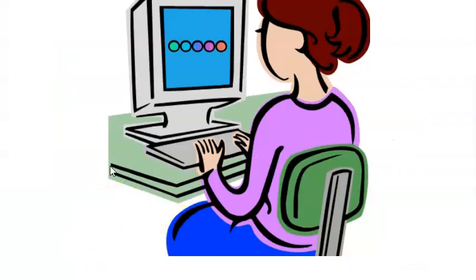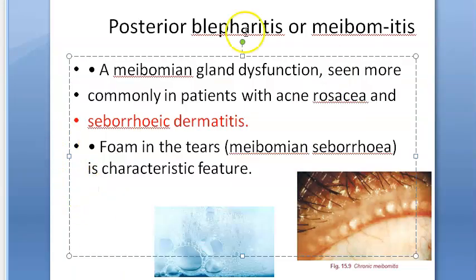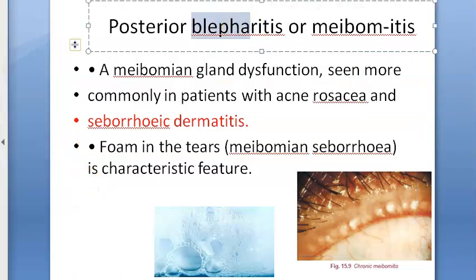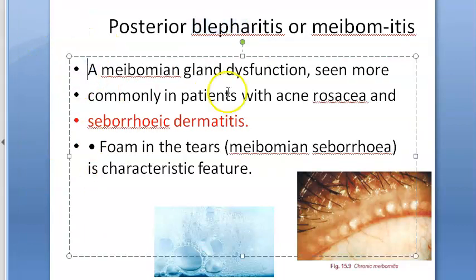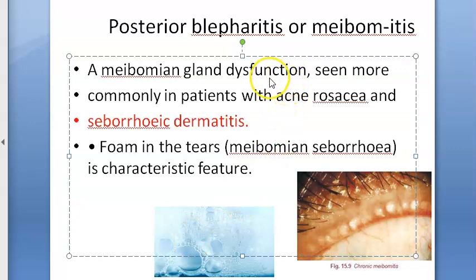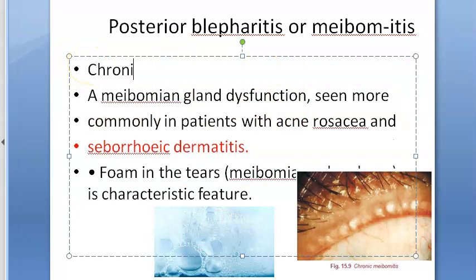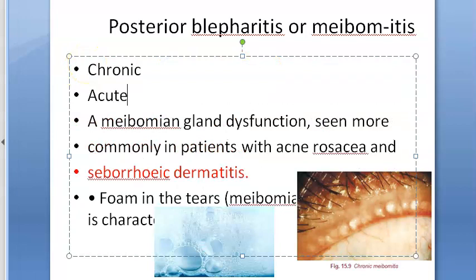Now let us look at posterior blepharitis or meibomitis in detail. There are two types: chronic and acute. Chronic meibomitis is the commonly occurring meibomian gland dysfunction, commonly seen in middle-aged persons, especially those with acne rosacea or seborrheic dermatitis. Bacterial lipases are blamed to play the main role in its pathogenesis.